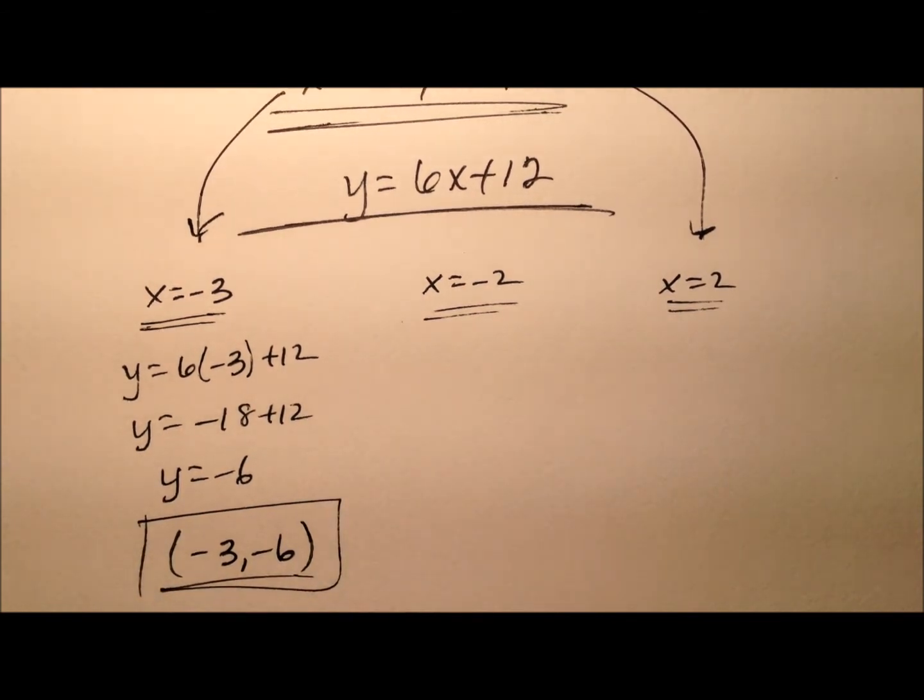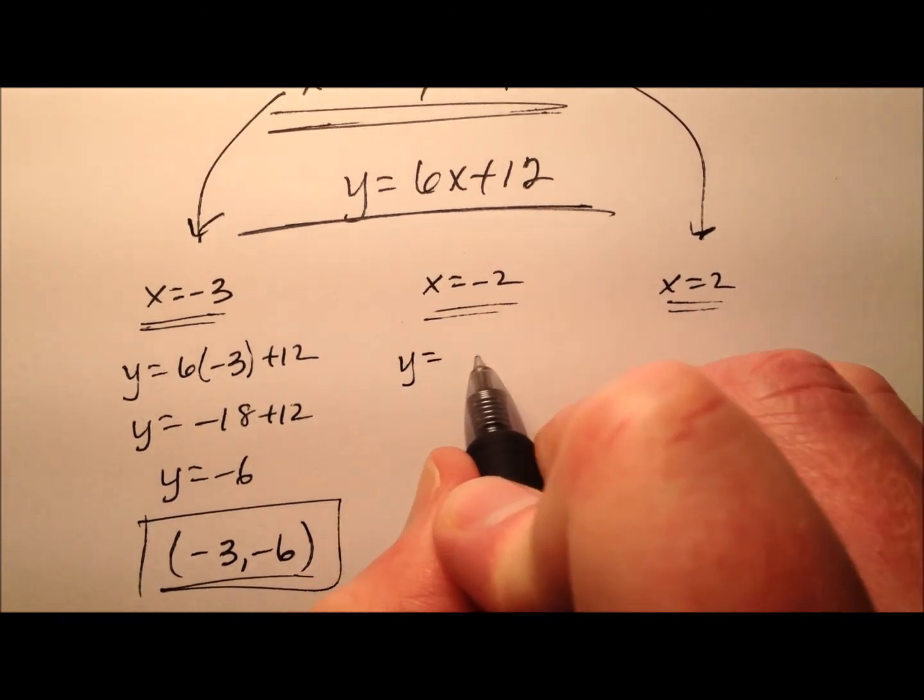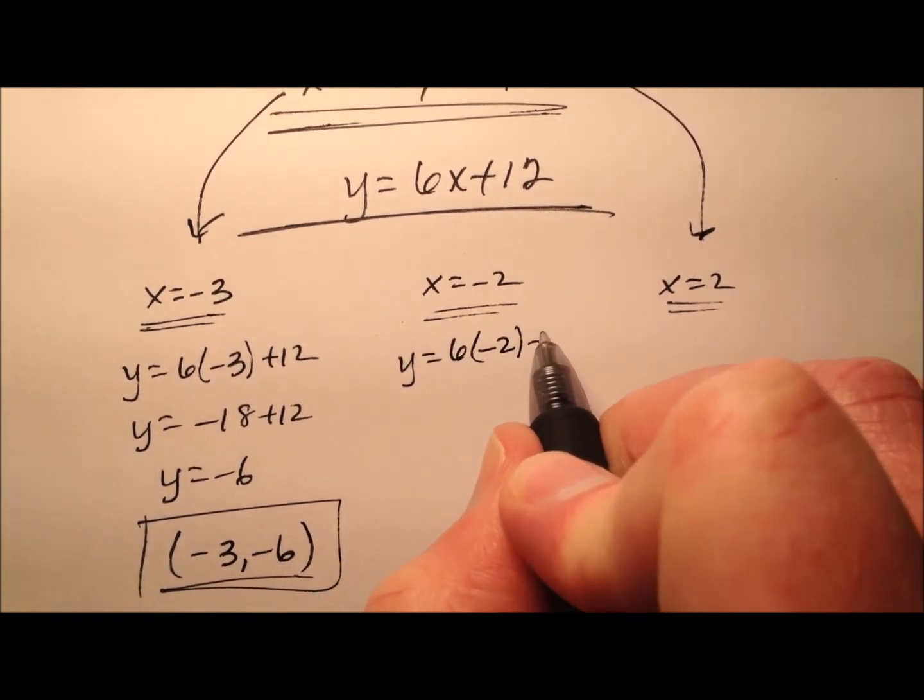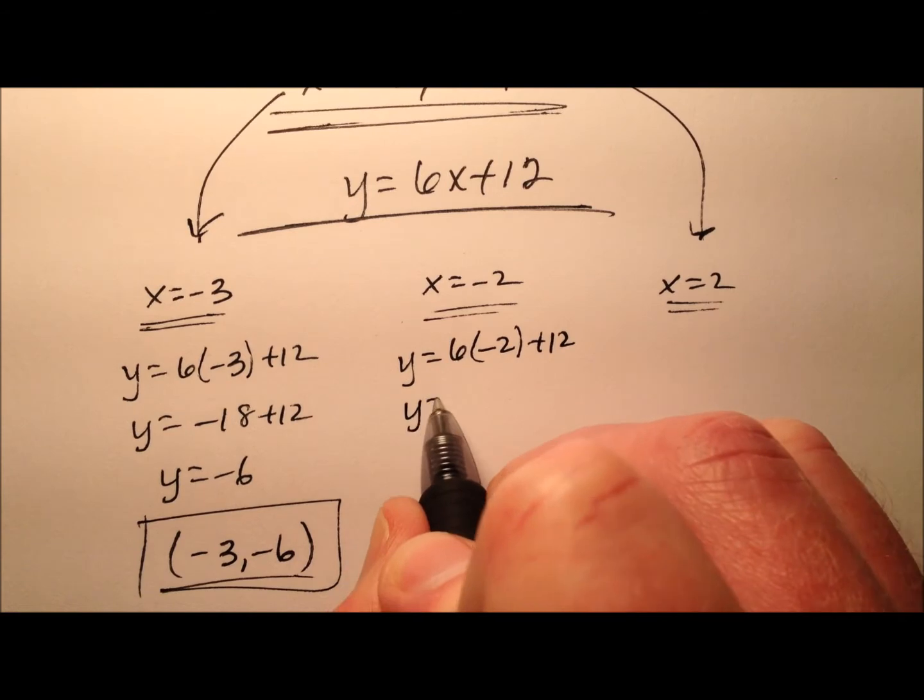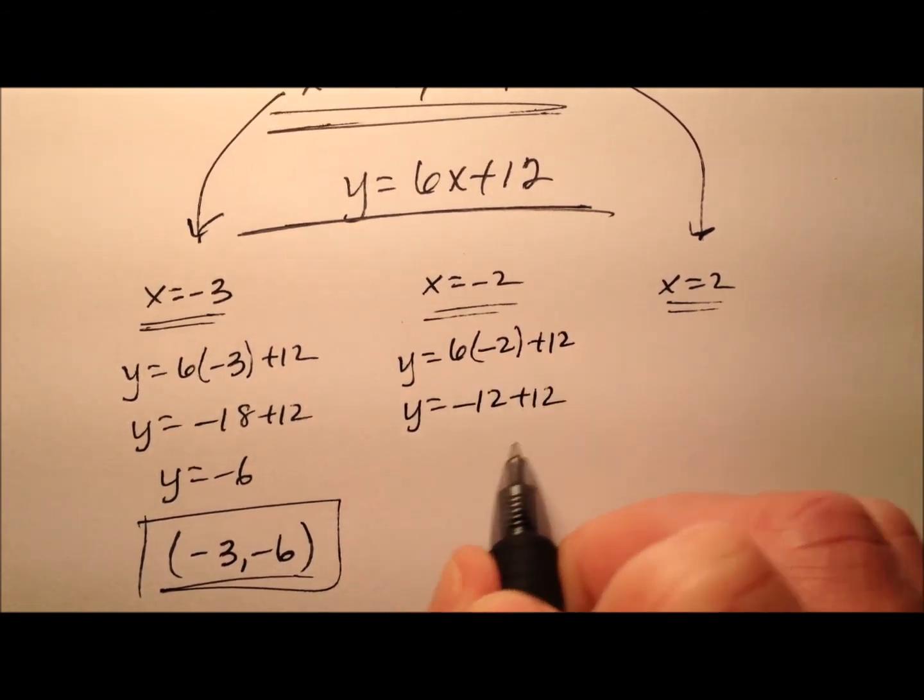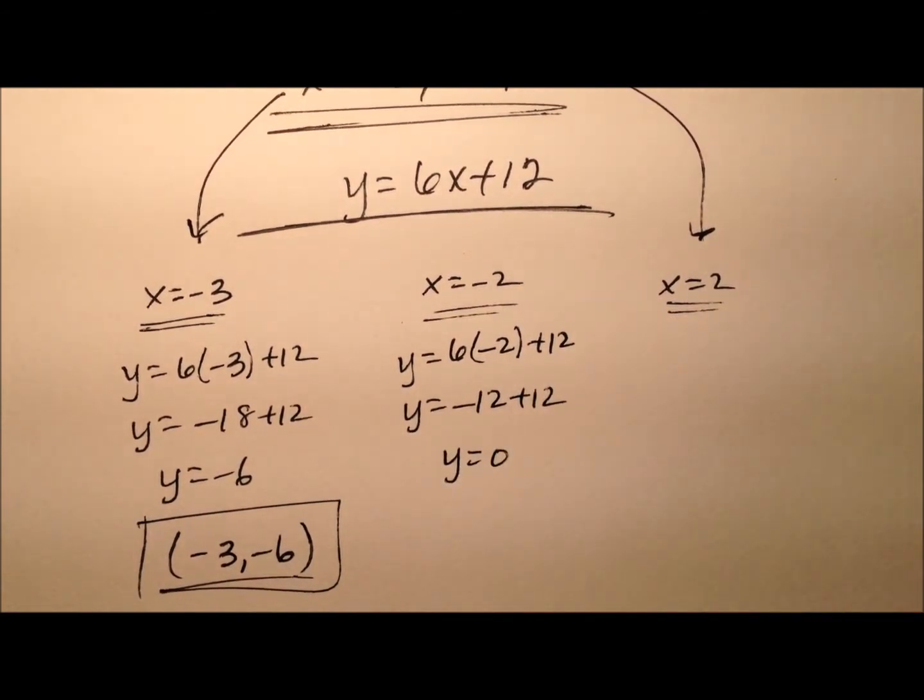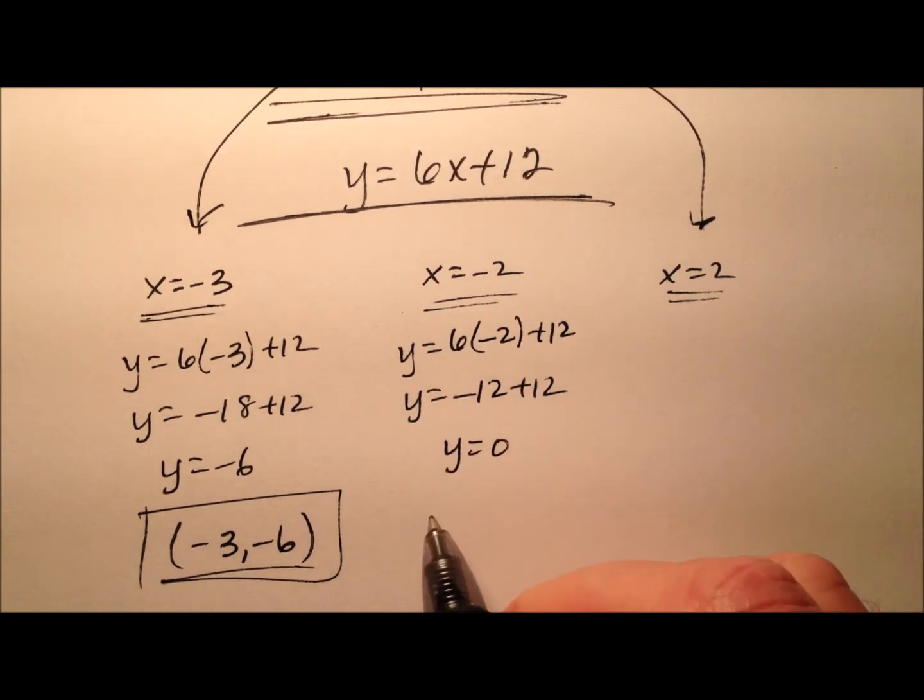The second one is when I plug negative 2 in for x. So let's go ahead and do that. That's 6 times negative 2 plus 12, so y equals negative 12 plus 12, y equals zero. Alright, so this ordered pair solution will be negative 2, zero.